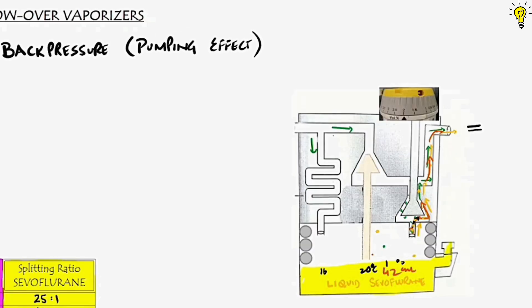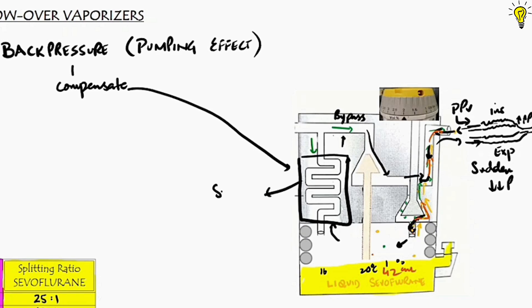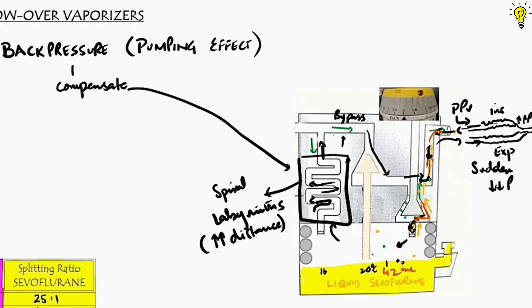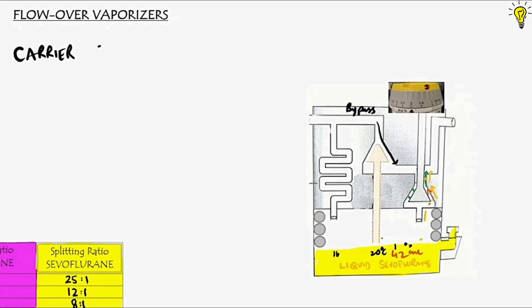The pumping effect happens during positive pressure ventilation. During the positive inspiratory phase, back pressure directs saturated vapor in reverse through the labyrinth and into the bypass track. When pressure suddenly drops on expiration, flow from the bypass track moves forward and into the patient, delivering greater than the dialed concentration. To counter this, a check valve prevents back pressure from reaching the vaporizer during inspiration. Also, the serpentine labyrinth extends the distance that backflow must cover during inspiration, so by the time it travels back through the spirals, inspiration ends and expiration starts. A third safety feature is that vapor chambers are relatively small — smaller chambers mean smaller volumes of saturated vapor tracing back into bypass and a smaller impact on the patient.